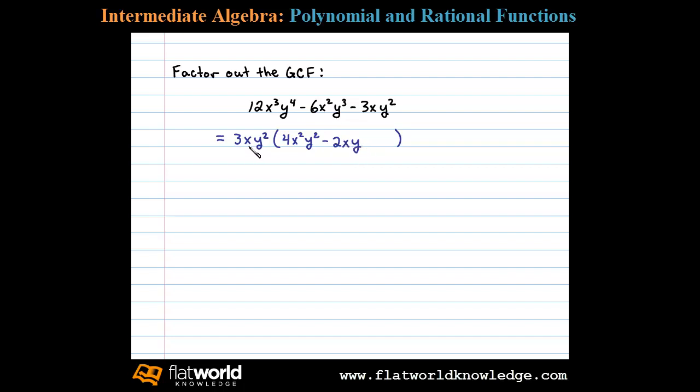And then finally, 3xy² divides into -3xy², leaving us with -1. And there we have it - we've factored out the GCF.